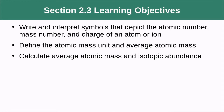In section 2.3, we're going to talk about how to write and interpret the symbols that depict the atomic number, mass number, and charge of an atom — used to describe atomic structure. We'll also define the atomic mass unit and the average atomic mass, and then do some calculations.